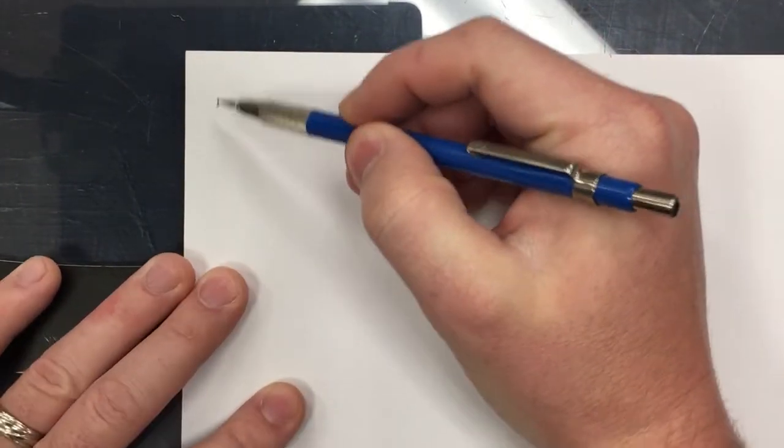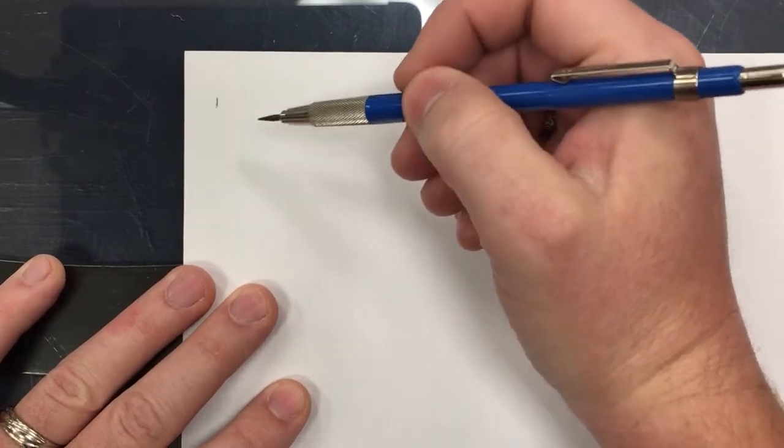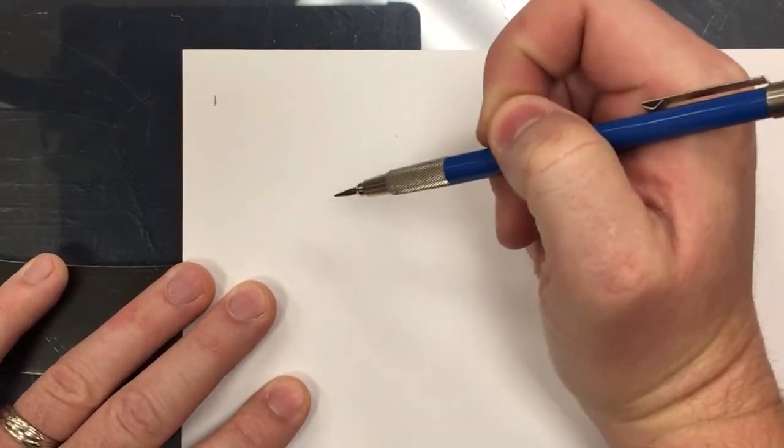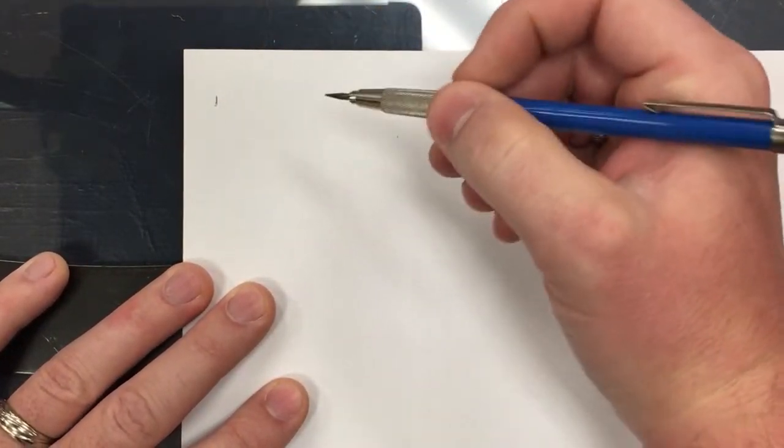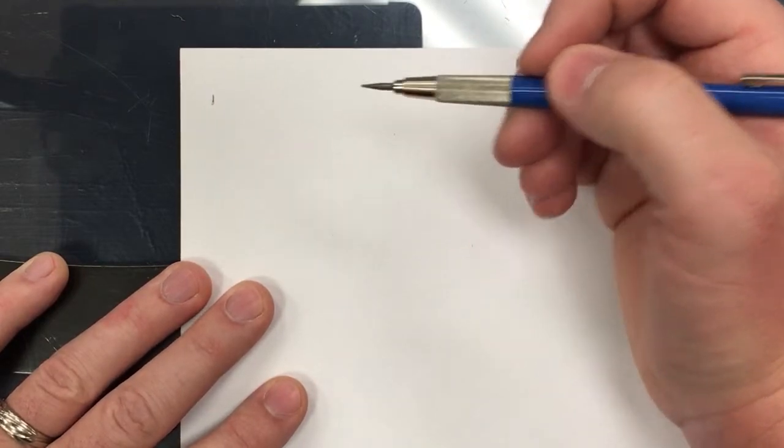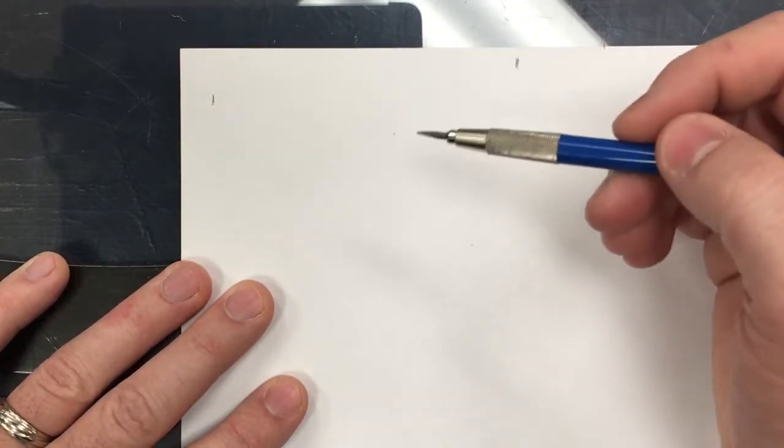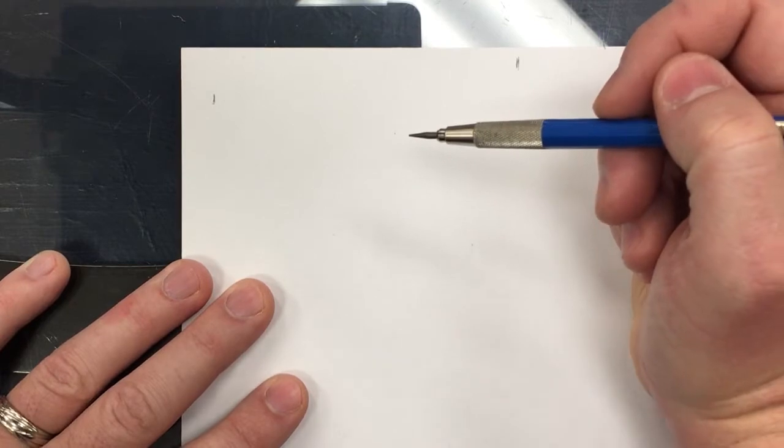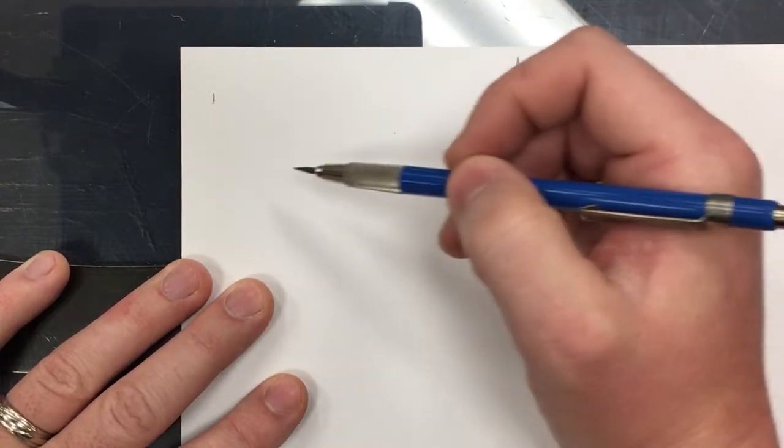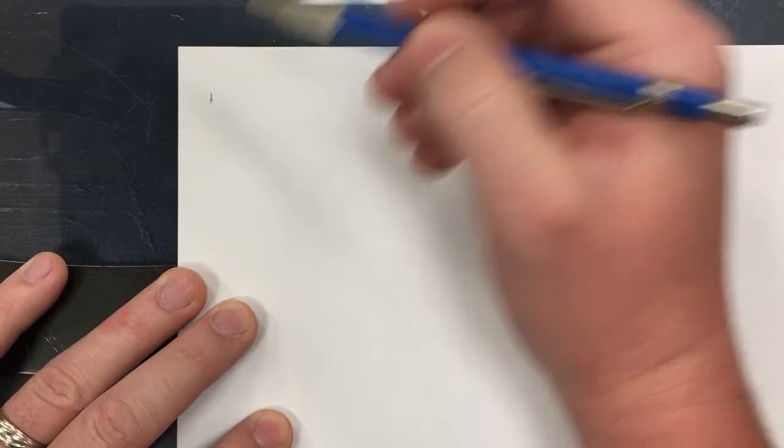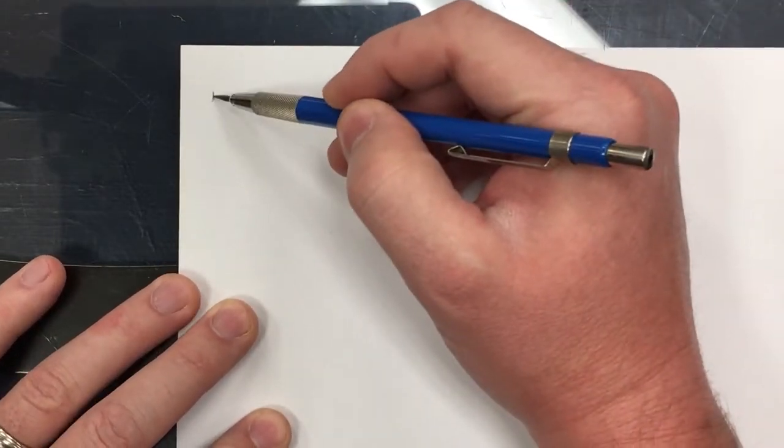As in previous videos, we have started with making a little oval. I'm making sure that I'm not holding myself up with my hand. I'm standing right now, but if you're sitting it's no different - just make sure you're not leaning on your paper. You want your hand to be able to slide freely.